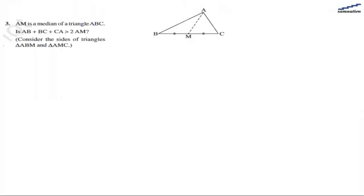In this question, we are given a triangle ABC where AM is a median, which means M divides BC into two equal parts, so BM equals MC. Because AM is a median, it divides the line into two equal parts. We are asked to find out whether AB plus BC plus CA is greater than 2AM.